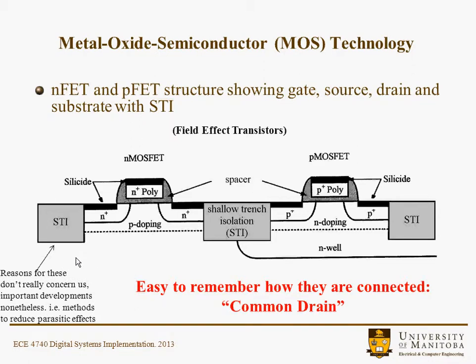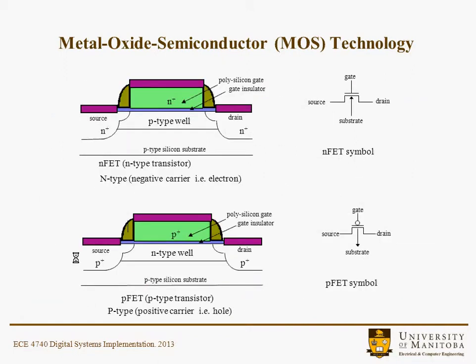The reasons for the STI, or shallow trench isolation, as I mentioned, are to prevent latchup and things that don't really concern us as designers using the technology, but are certainly very important to the technology itself. Here are a couple more schematics of the MOS device in a little bit more detail, showing the gate material, the N-plus oxide layer, which is quite thin, and then the source and drain regions, along with other material characteristics required to make the device function at such small scales.